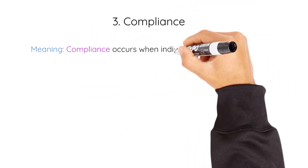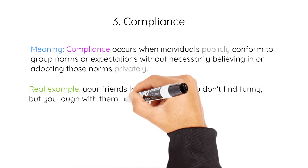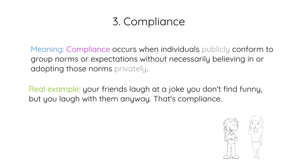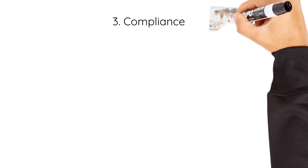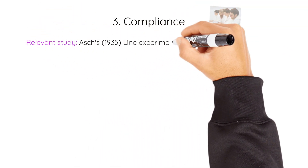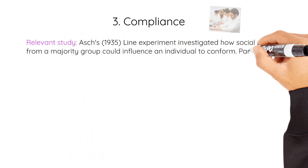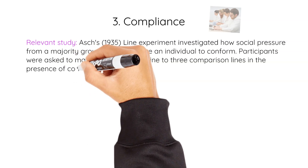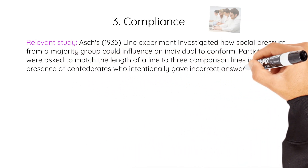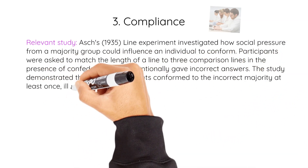Three: Compliance. Compliance occurs when individuals publicly conform to group norms or expectations without necessarily believing in or adopting those norms privately. A real example is when your friends laugh at a joke you don't find funny, but you laugh with them anyway — that's compliance. A relevant study demonstrating compliance is Asch's line experiment, which investigated how social pressure from a majority group could influence an individual to conform. Participants were asked to match the length of a line to three comparison lines in the presence of confederates who intentionally gave incorrect answers. The study demonstrated that many participants conformed to the incorrect majority at least once, illustrating compliance.